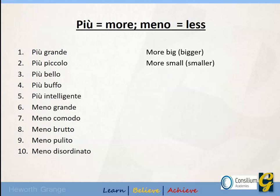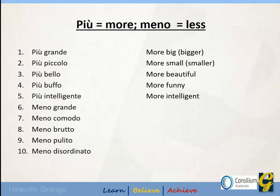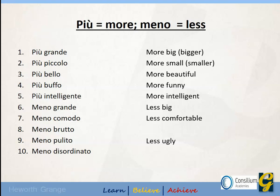Va bene, risposte. Bigger. Smaller. More beautiful. More funny. More intelligent. E poi, meno grande meaning less big — you might say smaller. Less comfortable. Less ugly. Less clean — that was pulito, it doesn't mean polluted, some people often muddle that up. And meno disordinato — disordinato meaning untidy.